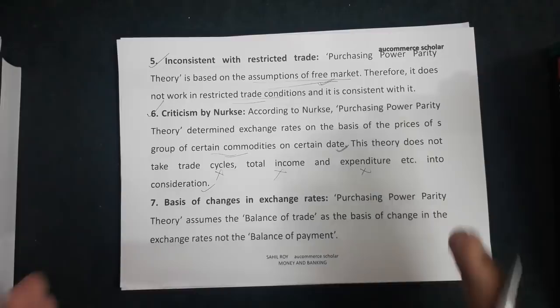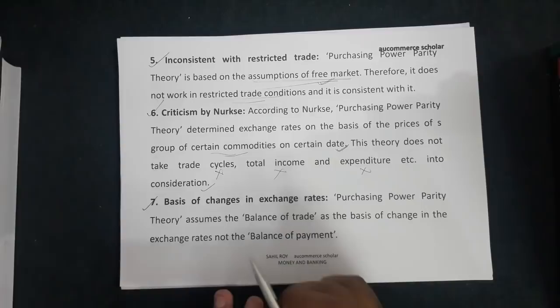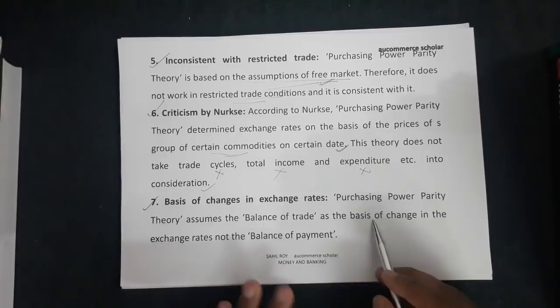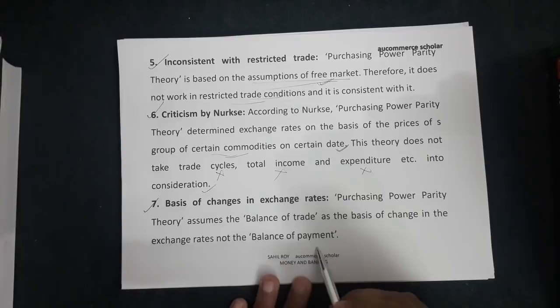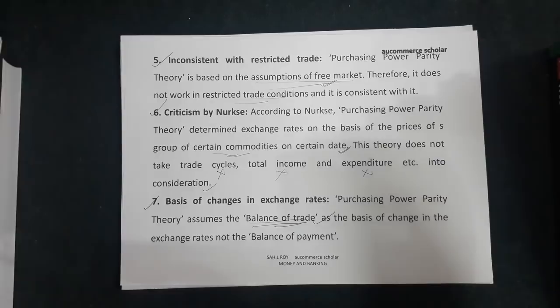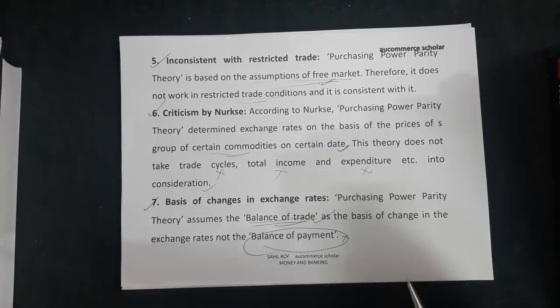The seventh and last criticism is about the basis of changes in exchange rate. The purchasing power parity theory assumes balance of trade as the basis of exchange — not the balance of payment. In this theory, the exchange rate is determined on the basis of balance of trade, not balance of payment. We use balance of trade, not balance of payment, in exchange rate determination here.